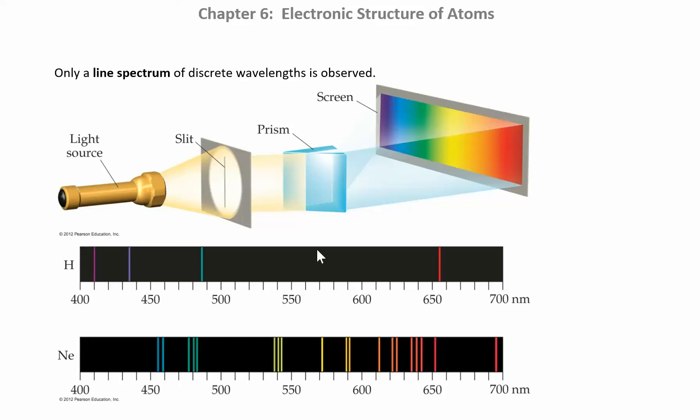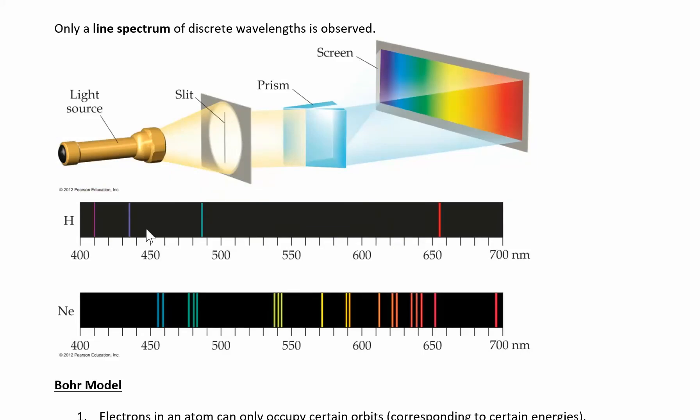So this is line spectrum. These are the line spectra and each element, it's like a fingerprint for that element. So each one kind of has its own spectrum.